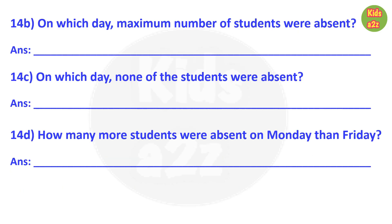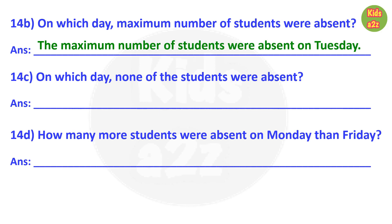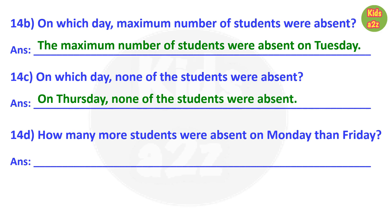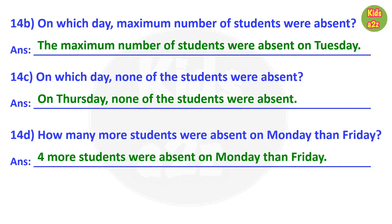For Question 14b, on which day were the maximum number of students absent? The answer is Tuesday. Question 14c: On which day were none of the students absent? The answer is Thursday. Next question: How many more students were absent on Monday than Friday? The answer is 4 more students were absent on Monday than Friday. Thanks for watching Kids A to Z.